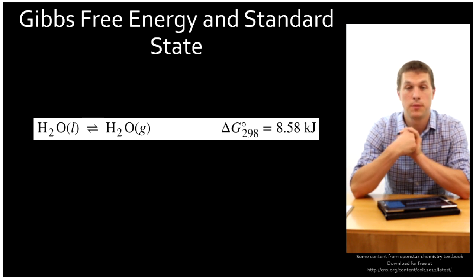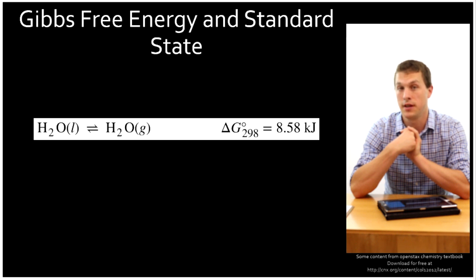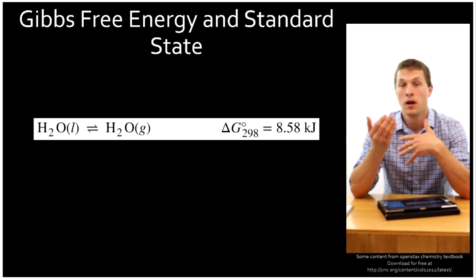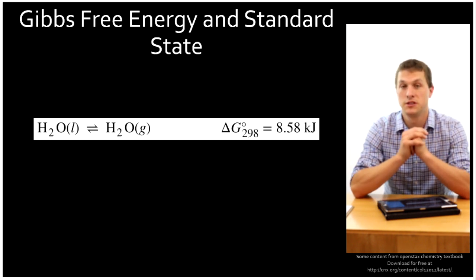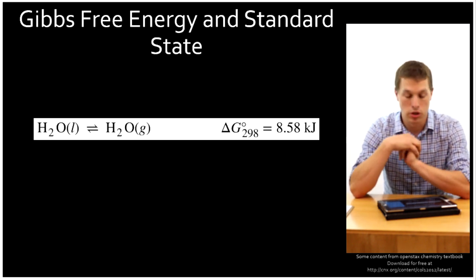Another thing Gibbs free energy tells us is about the spontaneity of the reaction. Negative delta G's tell us the reaction is spontaneous. Positive delta G's tell us it's non-spontaneous. For more information on the spontaneity part, check out my other video on Gibbs free energy and spontaneity and I'll link to that below.